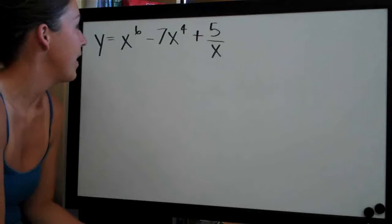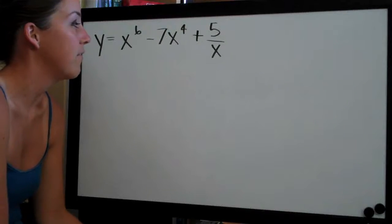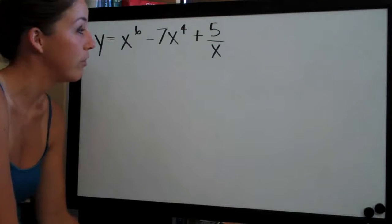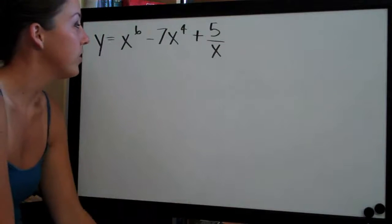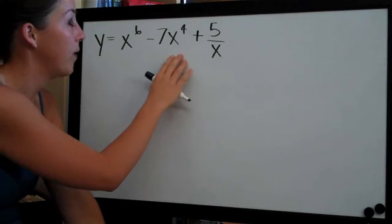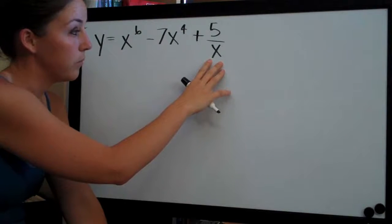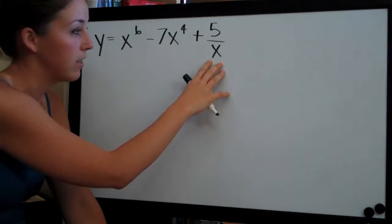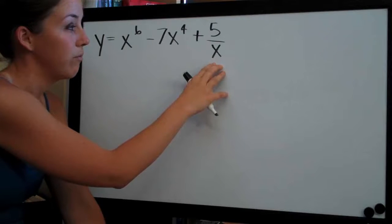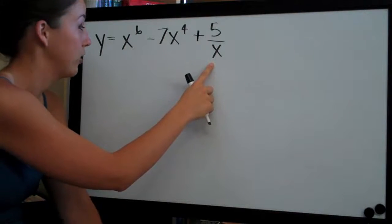This one is y equals x to the 6th minus 7x to the 4th plus 5 over x. So the first thing we need to do, we'll have no problem with the first two terms but the third term where we have a fraction here and an x in the denominator will give us some trouble if we don't convert this to something that's not a fraction.